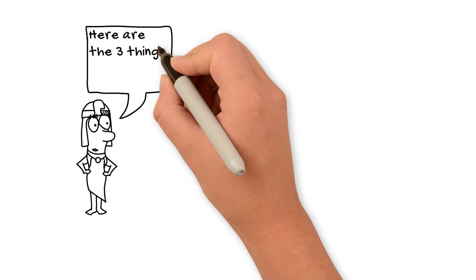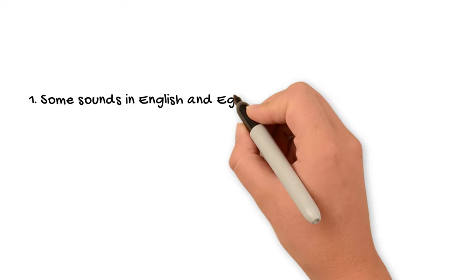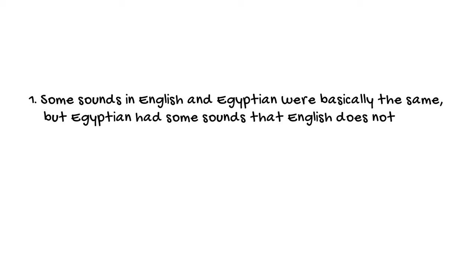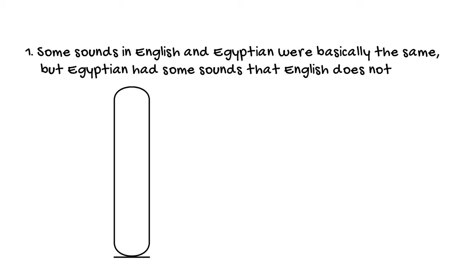Let's jump right into the three things that you need to know about these hieroglyphic signs in the so-called hieroglyphic alphabet. Number one: some sounds in English and Egyptian were basically the same, but Egyptian also had sounds that English does not. Many of the sounds that these 25 signs can represent are the same or very close to the consonants in English.